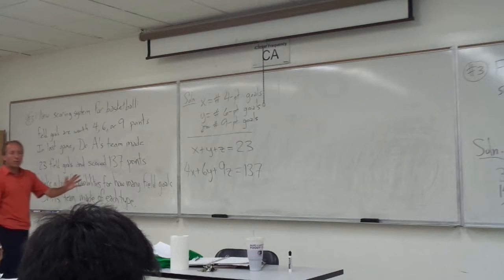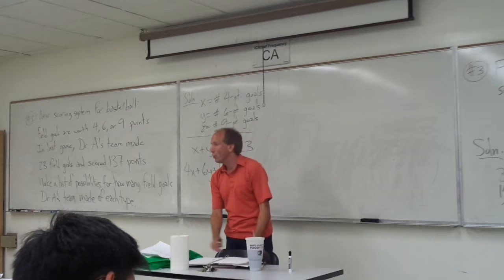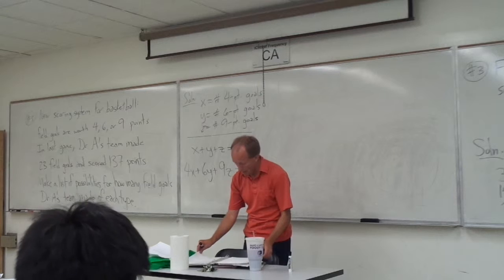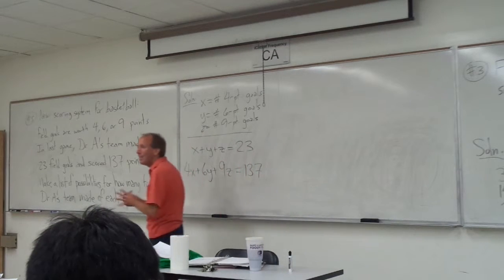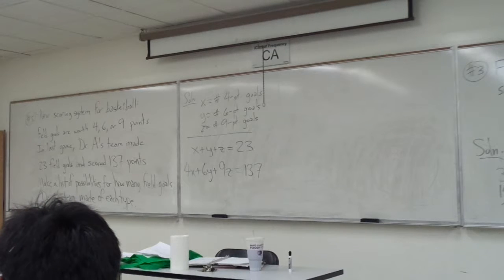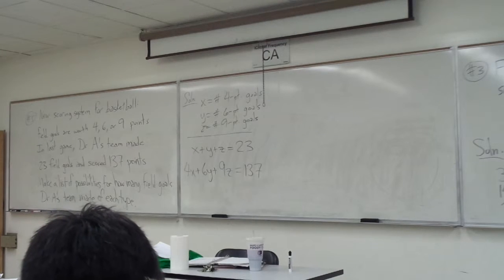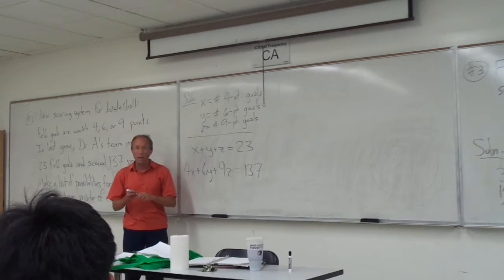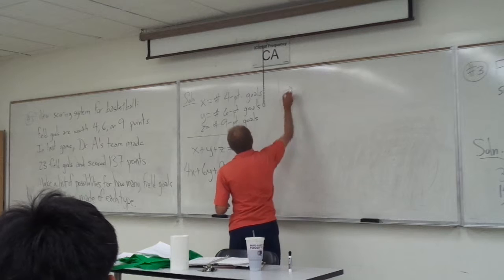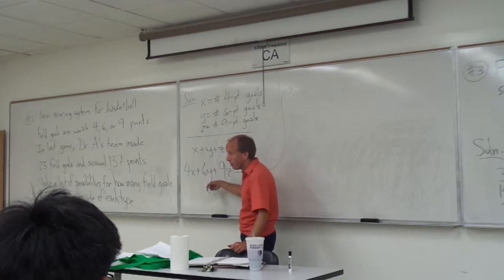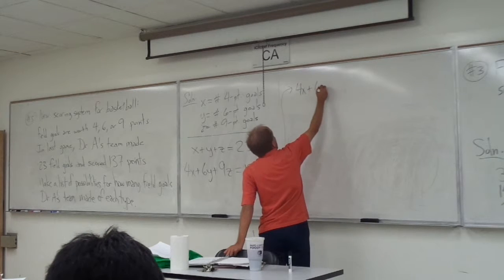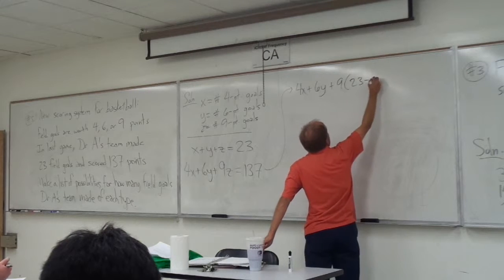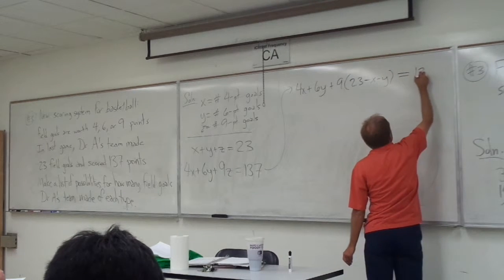So, any suggestions as to sort of how we might want to work with these two Diophantine equations? Any ideas on what's the next step here? Is that what you were going to say? Exactly, good, so we're going to solve for one of the variables and plug it into the other one. Let's just take, it's easier to avoid fractions if you solve it in the first one and plug it in the second one. So, 4X plus 6Y plus 9 times the quantity 23 minus X minus Y adds up to 137.